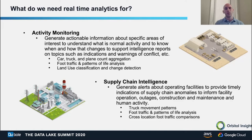In supply chain intelligence, we use geospatial analytics to figure out weak points or new points in a particular supply chain. As products move from one location to another, identifying single points of failure — or new areas of interest — is very useful to suppliers. We can use truck movement patterns to identify where products are going, foot traffic and patterns of life analysis to determine where people are coming from, and compare visitor overlap between different locations.